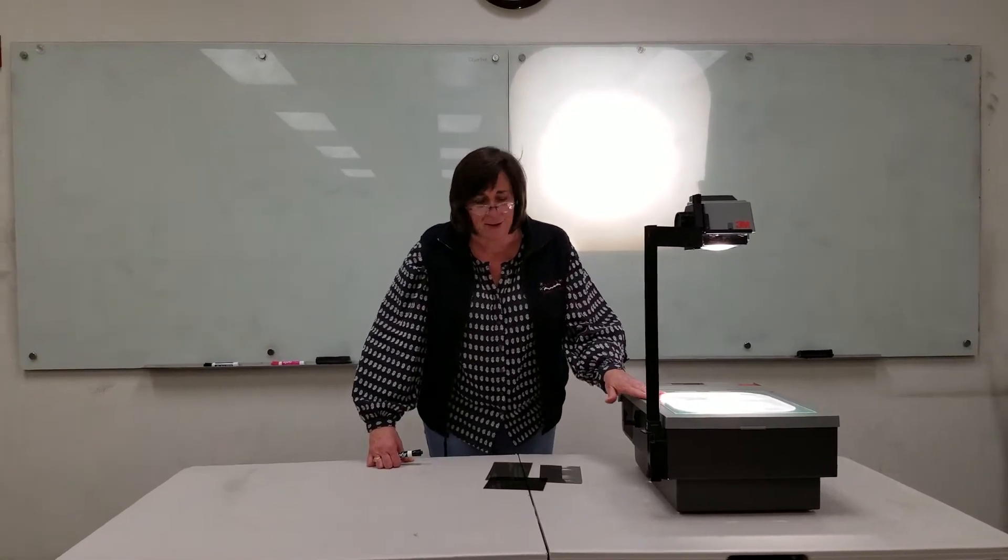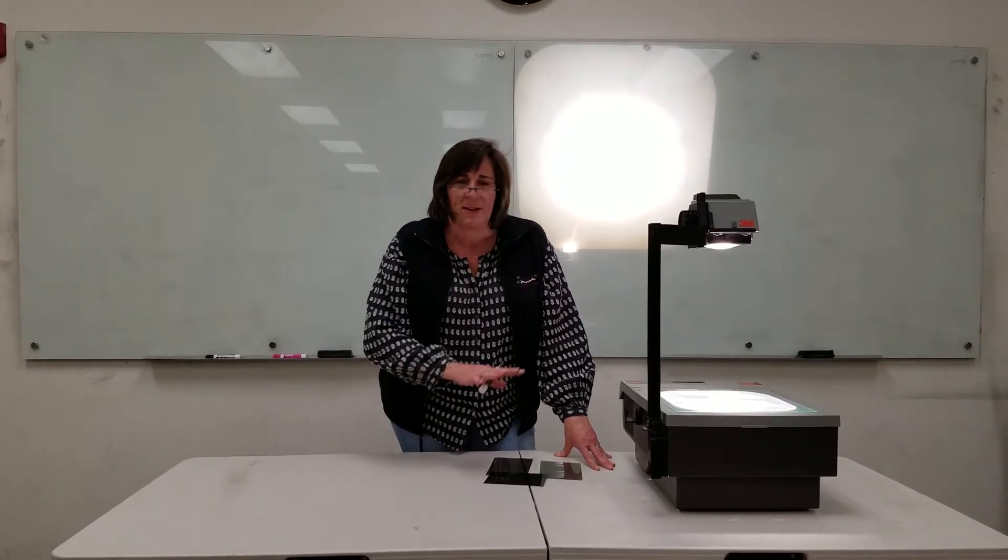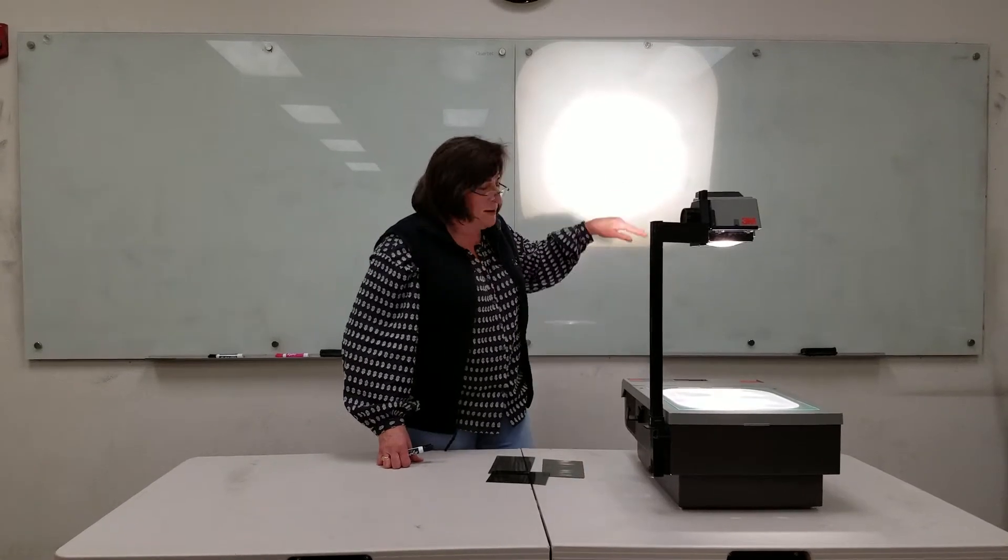So here I have an overhead projector. The light is shining from the bottom up through onto the board. Now the light coming out of my projector is unpolarized which means it has light polarized equally in all different directions in the plane of the board there.